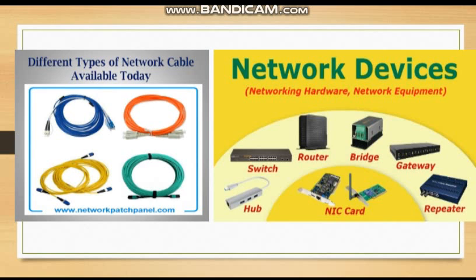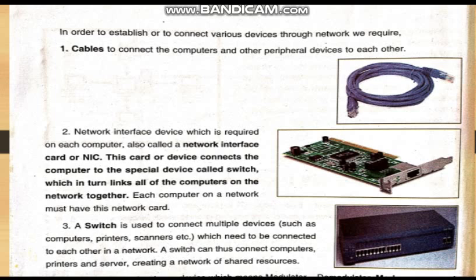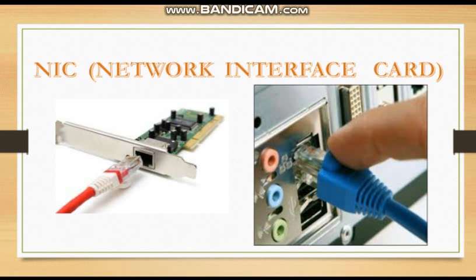These are some network devices which are needed to form a network, such as wire, switch, router, network interface card, and repeater. A cable is used to connect the computer and other peripheral devices to each other. A network interface card is a device that connects the computer to a specific device called a switch, which in turn links all the other computers on the network together. This is a network interface card which is attached in a central processing unit and helps to connect the Ethernet cable.